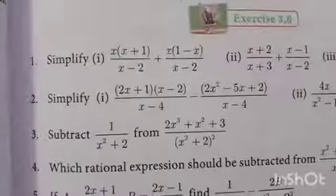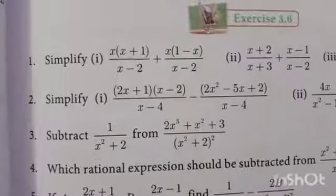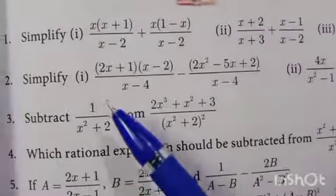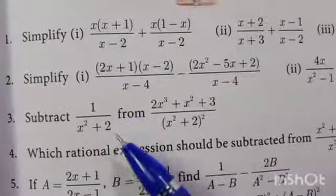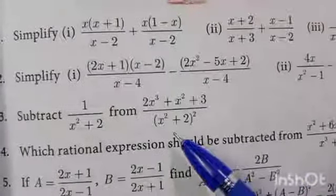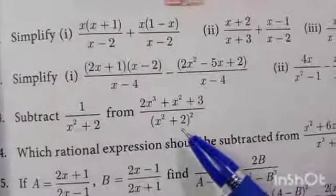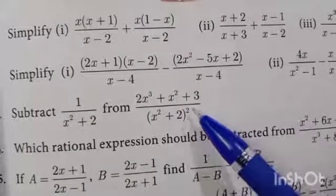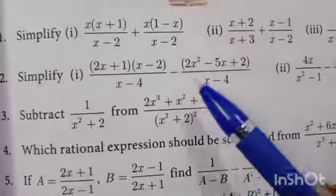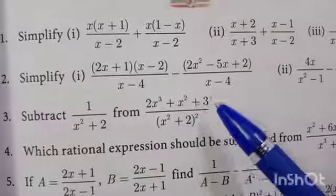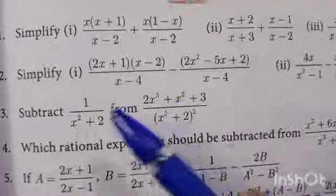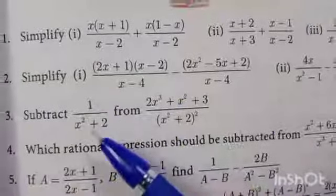In the previous video you learned exercise 3.6, first two problems. Now the third problem: subtract 1 by x-squared plus 2 from (2x-cubed plus x-squared plus 3) divided by (x-squared plus 2) whole square. This is rewritten as (2x-cubed plus x-squared plus 3) divided by (x-squared plus 2) whole square, minus 1 by (x-squared plus 2).